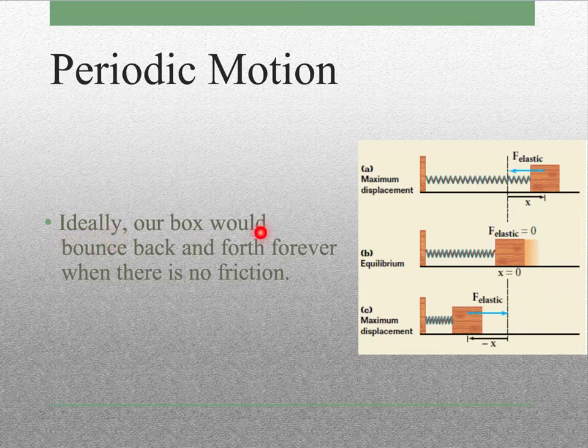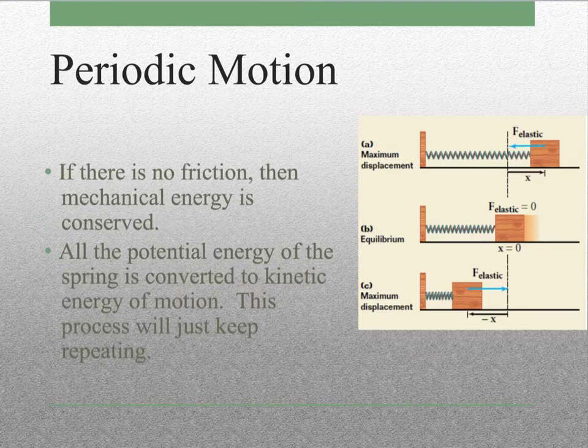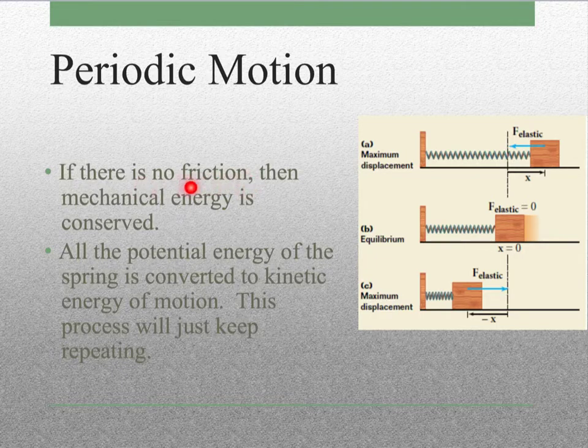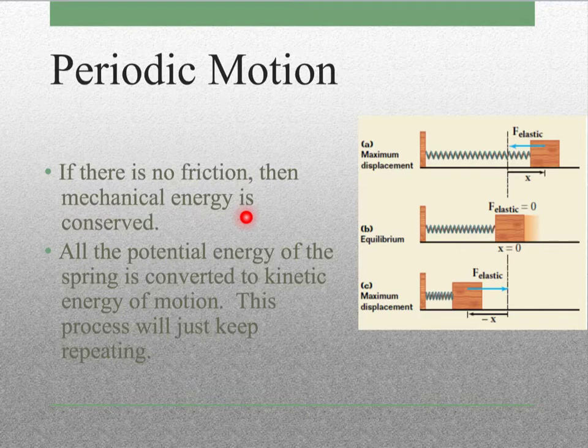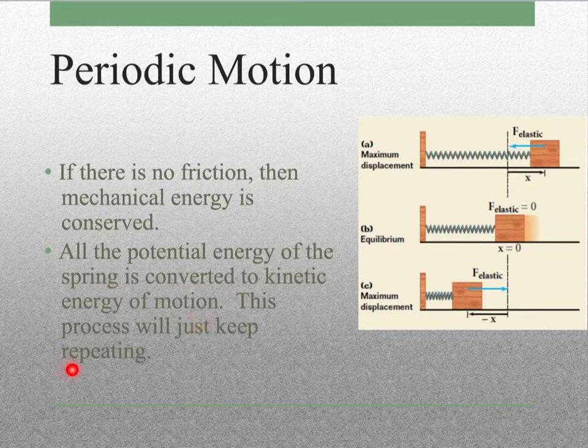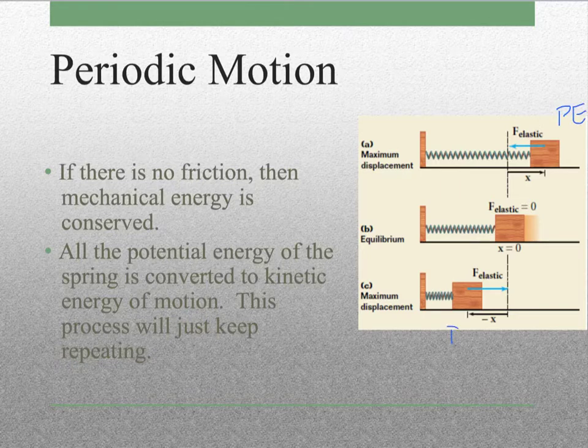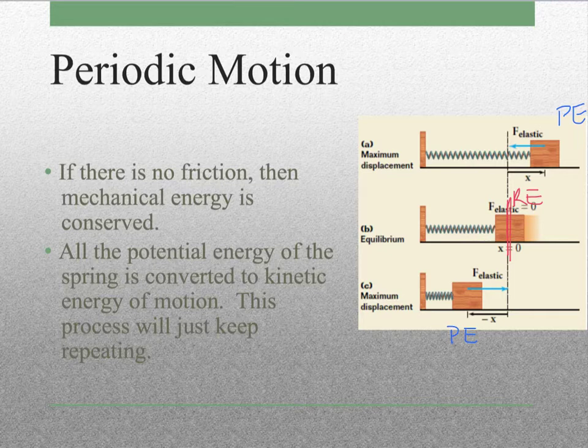So ideally, our box would bounce back and forth forever when there's no friction present. But if there's no friction, then we can say that the mechanical energy is conserved, and all the potential energy of the spring is converted to kinetic energy of motion. And this process will just keep repeating. So you could imagine that we have potential energy here, and you end up with potential energy here. And in the middle, it's all kinetic energy when the spring is not stretched at all. So if there's no friction, that energy is conserved.